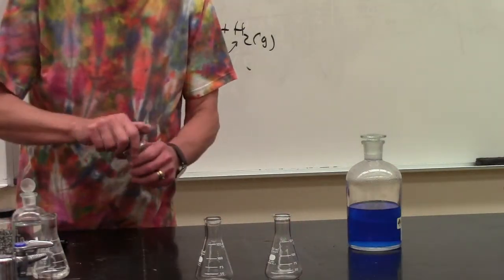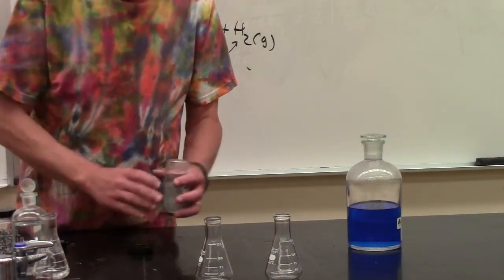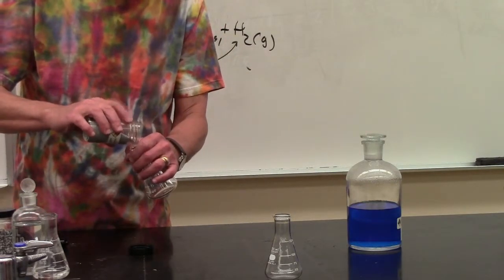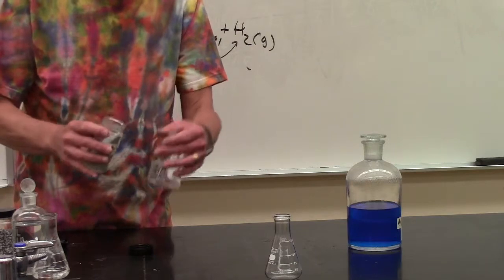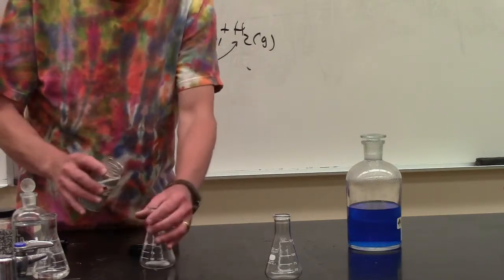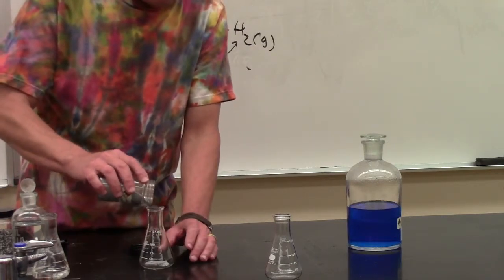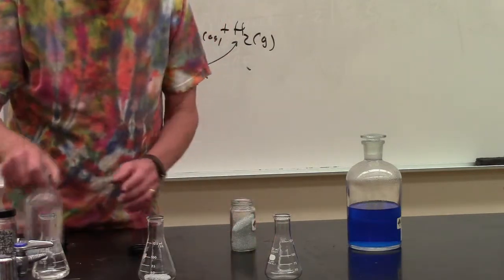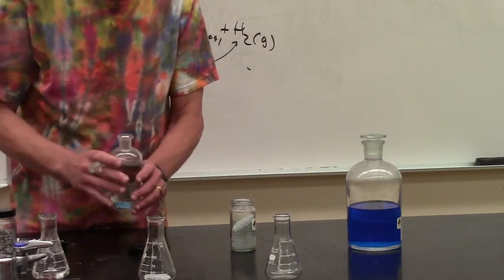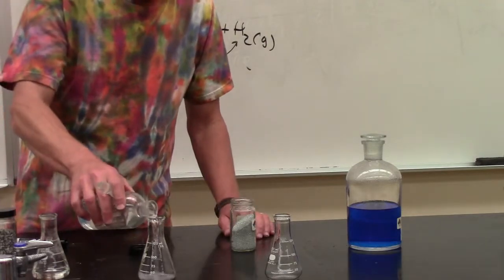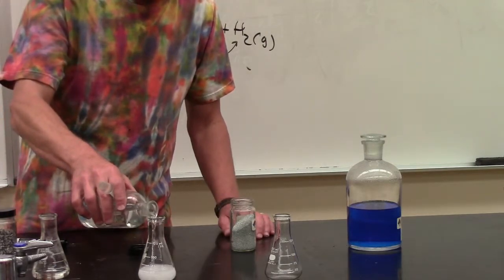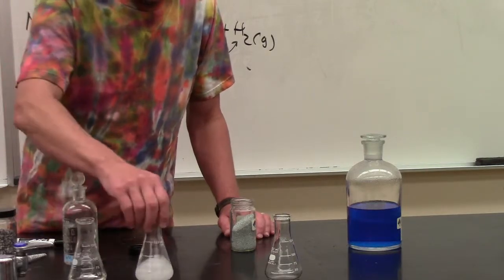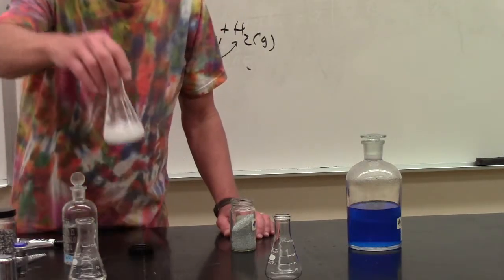Another common material is zinc. If you've ever heard of a galvanized pipe or a galvanized nail, that means it's coated with zinc. And again, we can put a little bit of zinc in this flask and add hydrochloric acid to it. Again, you can see bubbling, not quite as vigorous as the magnesium, but definitely bubbling for sure.